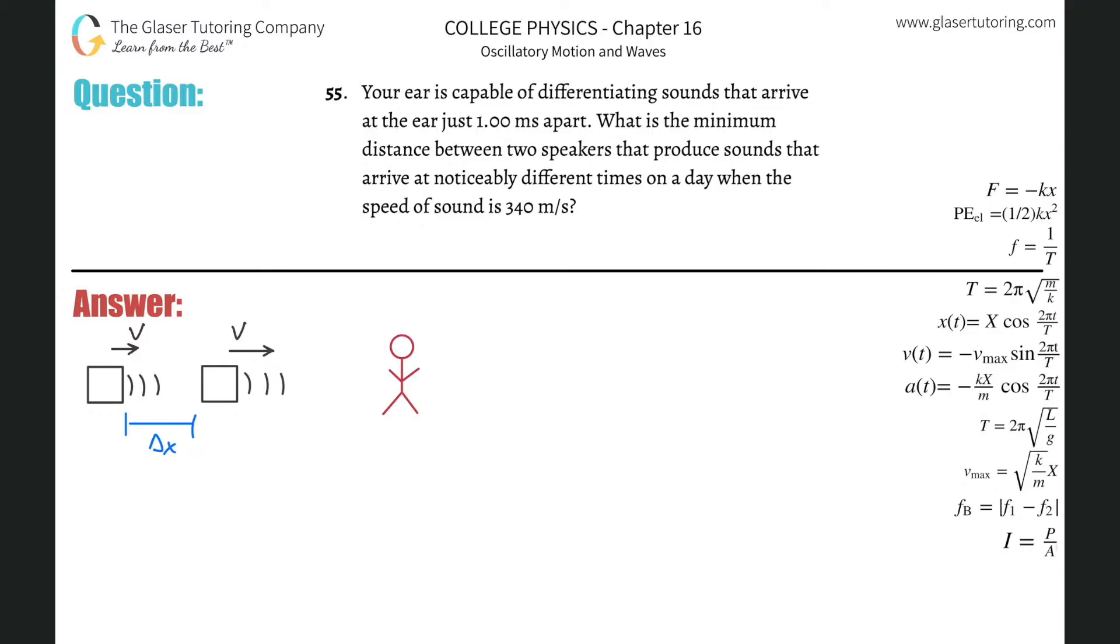Number 55. Your ear is capable of differentiating sounds that arrive at the ear just one millisecond apart. What is the minimum distance between two speakers that produce sounds that arrive at noticeably different times on a day when the speed of sound is 340 meters per second?